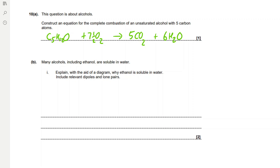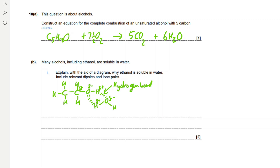Many alcohols including ethanol are soluble in water. Explain with the aid of a diagram why ethanol is soluble in water, including relevant dipoles and lone pairs. This is because ethanol can form hydrogen bonds with water. Draw ethanol with a delta-negative oxygen, delta-positive carbon, and delta-positive hydrogen, with a lone pair on the delta-negative oxygen. Then draw water with a delta-positive hydrogen, delta-negative oxygen, and lone pair. Draw and label the hydrogen bonds, and state that the hydroxyl group forms hydrogen bonds with water.